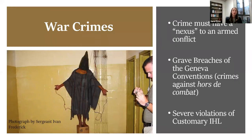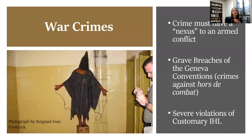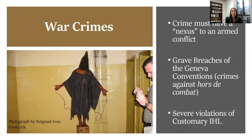Courts including the ICC generally distinguish between crimes committed in an international armed conflict and a non-international armed conflict, but many of these crimes apply to both types. An example of war crimes is the torture and abuse of prisoners at Abu Ghraib by U.S. officials — this treatment undeniably qualifies as a war crime, both as a grave breach of the Geneva Conventions as torture and under serious violations of customary international humanitarian law as an outrage upon personal dignity. These crimes were prosecuted before military tribunals in the U.S., where eleven soldiers were held criminally responsible, but it was not brought before an international court.